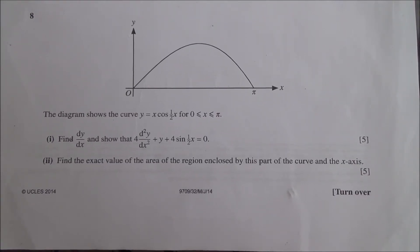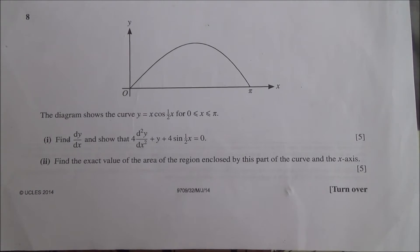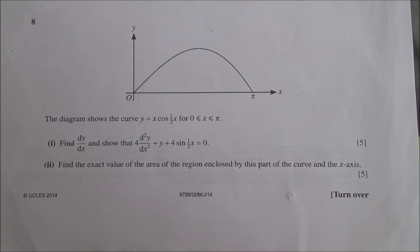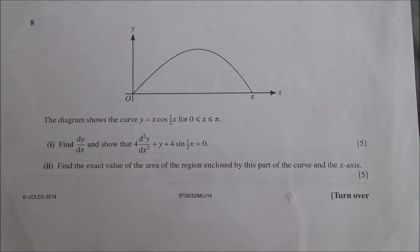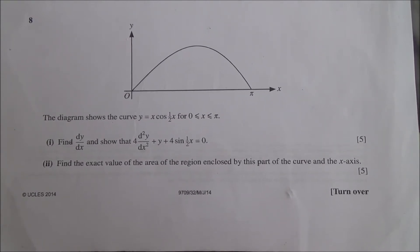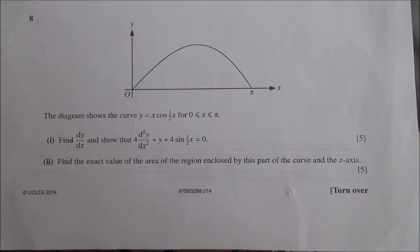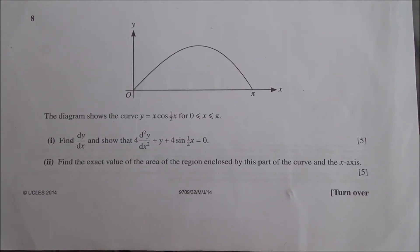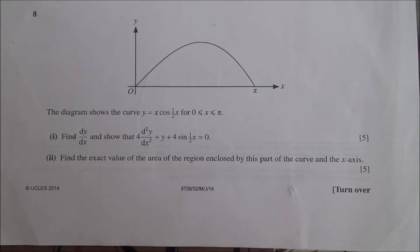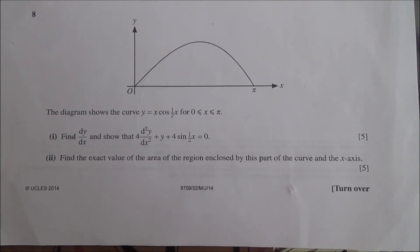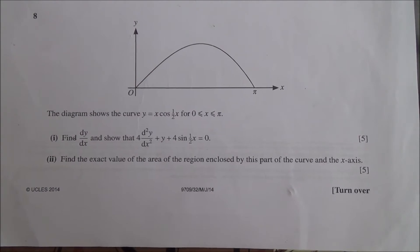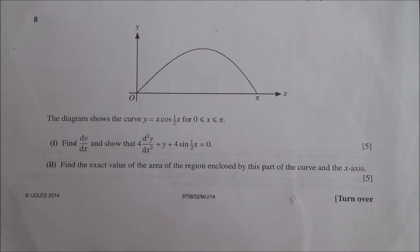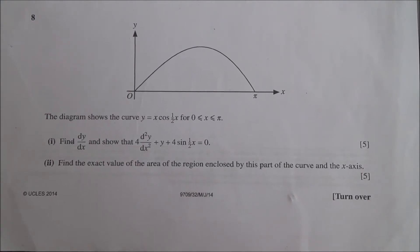Hi, question number 8 taken from June 2014 Advanced Level Maths HSC paper 3. The diagram shows the curve y equals x cos(x/2) for 0 ≤ x ≤ π. First part: find dy/dx and show that 4 d²y/dx² + y + 4 sin(x/2) equals 0. Also find the exact value of the area of the region enclosed by this part of the curve and the x-axis.